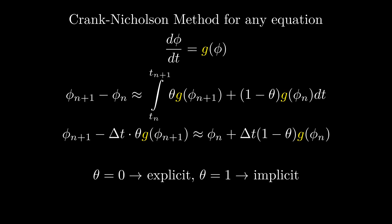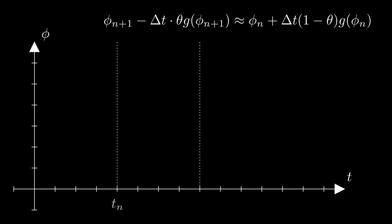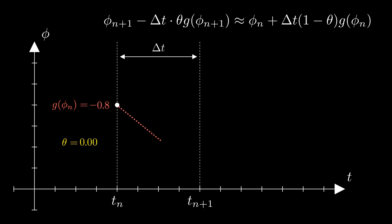Let's look at a more visual interpretation. Consider two times tn and tn+1 spaced delta t apart. We start at tn with a known value phi_n. Using the slope function g, we find what the slope at tn is. If theta is 0, that's the same as extrapolating the slope forward until we reach tn+1 to get phi_n+1 — this is the same as the explicit Euler method. Try plugging in theta equals 0 and g of phi equals minus phi to verify consistency with what we had before.